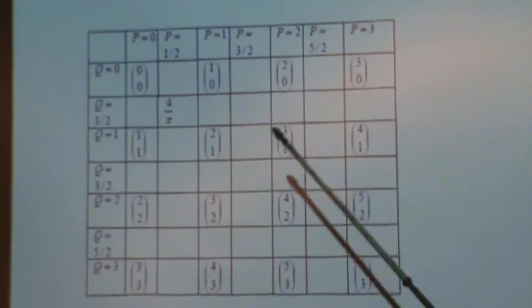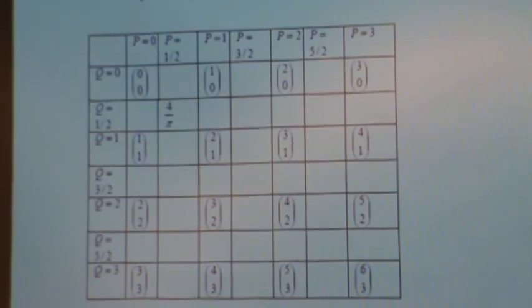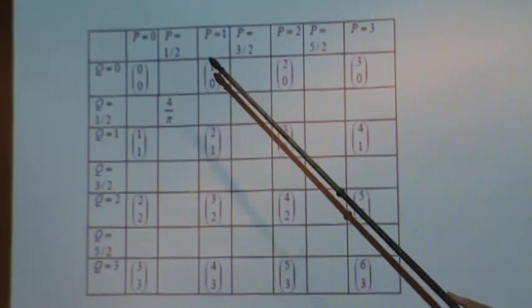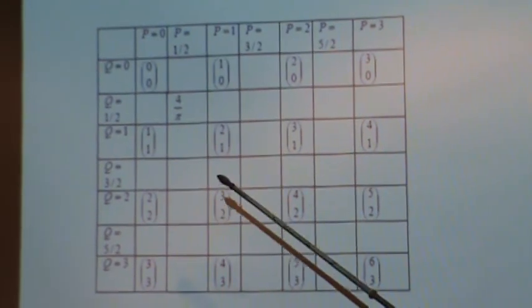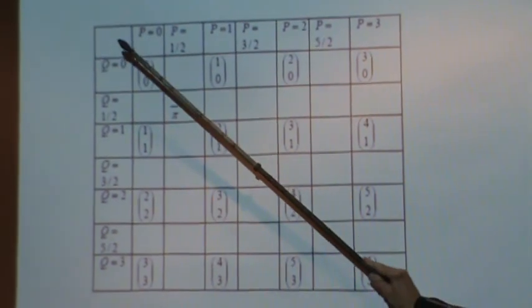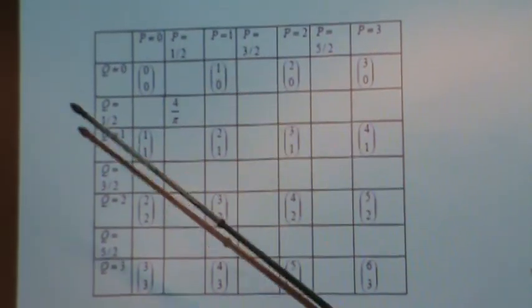Now, the first thing he notices when he does that is that there's symmetry in the table. See, this is the same as this. This is the same as this. There's symmetry around the diagonal. Things up here get reflected down here.